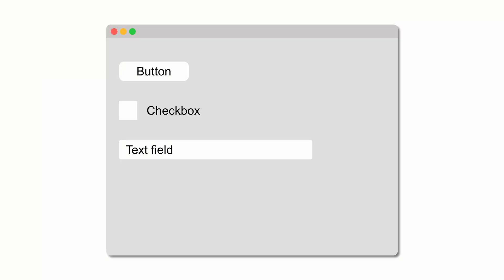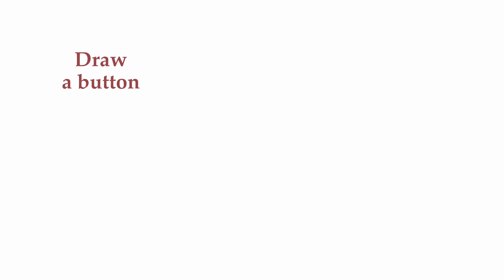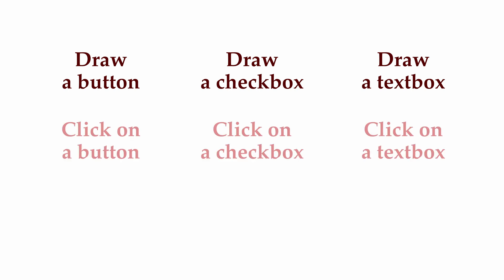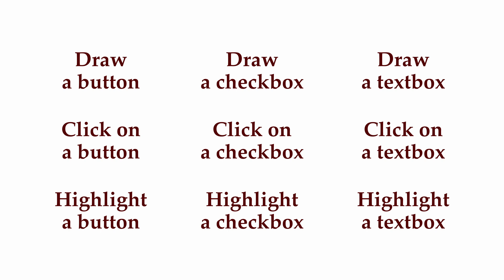Say we're building a graphical user interface where we want to support drawing a variety of different kinds of objects to the screen. We want to support buttons, check boxes, and text boxes, for example. In addition to drawing those objects, we also want to make sure users are able to click on them and highlight them as well. As we build this system, we have to make some choices about how to organize our code.